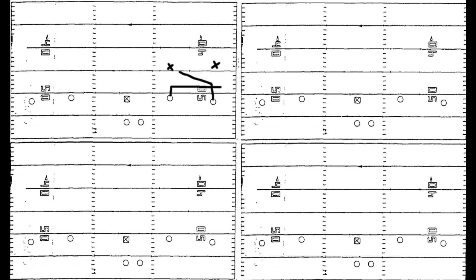The first thing we're going to talk about is in man defense, how do we cover rub routes and pick routes? We've seen them absolutely destroy the NFL this year. What happens is that this outside receiver just runs a slant, but he's not really concerned about running a good slant — he just wants to get in the way of this slot defender. And then our slot receiver runs an out route underneath it, and it often comes wide open.